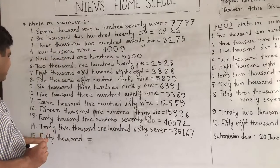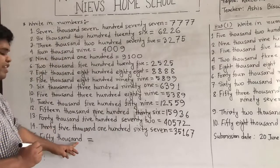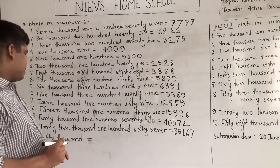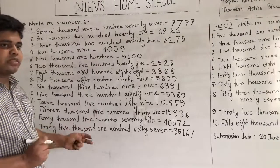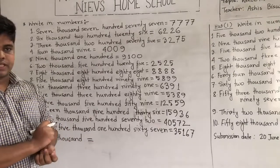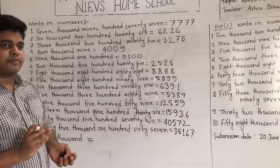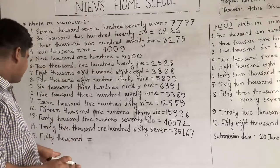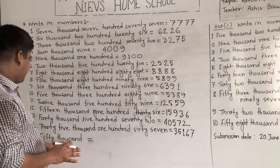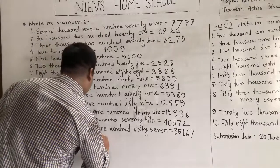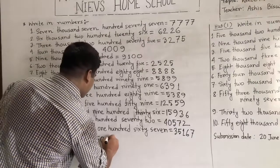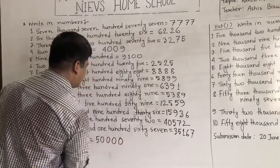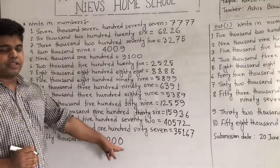And our last number is 50,000. Students, notice: the hundreds place, tens place, and ones place are absent. So hundreds place, tens place, and ones place will all be 0 because they are absent here. So we write 50 first, then 0 for hundreds, 0 for tens, and 0 for ones. This is called 50,000.